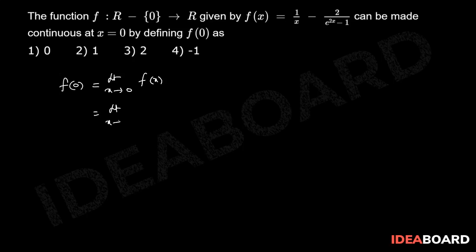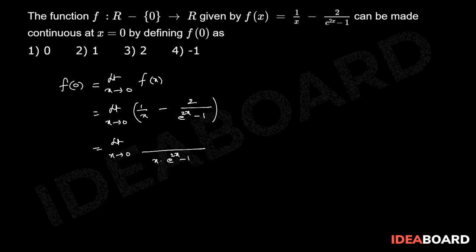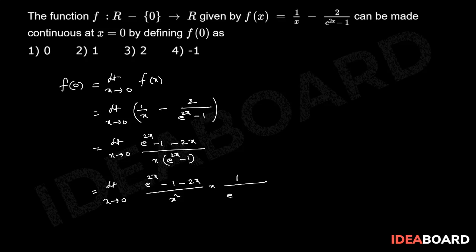So f(0) = limit x tends to 0 of [1/x - 2/(e^(2x) - 1)]. Taking LCM, this equals limit x tends to 0 of [(e^(2x) - 1 - 2x) divided by x(e^(2x) - 1)]. Multiplying and dividing by x, this becomes limit x tends to 0 of [(e^(2x) - 1 - 2x) divided by x squared] multiplied by [1 / ((e^(2x) - 1)/x)].